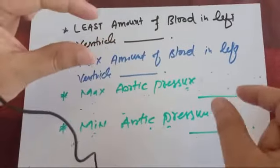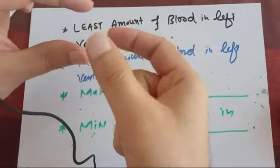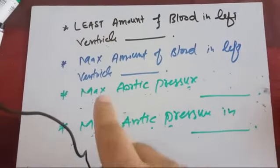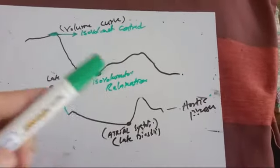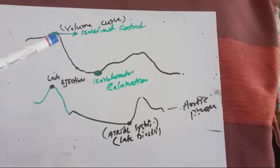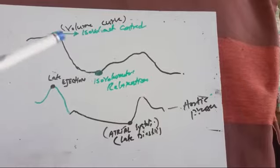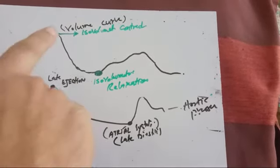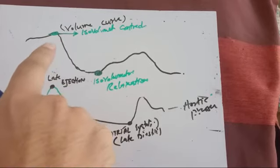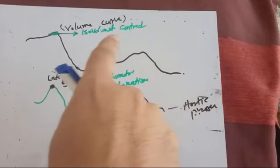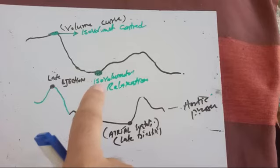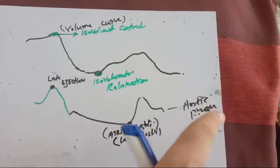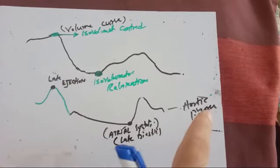During rapid ejection, blood flows rapidly, but during slow ejection there is recoil, creating more resistance and thus maximum aortic pressure. So the maximum volume of the left ventricle occurs at isovolumetric contraction. If you remember these pressure-volume curves and diagrams, you can pick the concept in each MCQ easily. Maximum blood volume in the left ventricle is during isovolumetric contraction, and minimum blood volume is during isovolumetric relaxation.